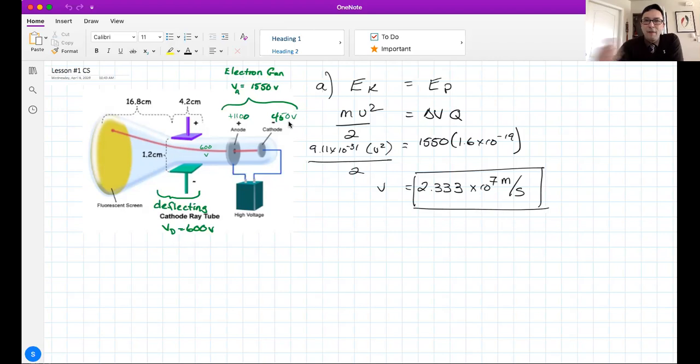That's how fast the electrons are going when they emerge through the little hole in this anode onto this side of the CRT. They have 2.3 × 10⁷ meters per second horizontally. Now the electrons fly into the space between these two electric plates. One's positive, one's negative, and we can change which one is positive depending which way we want to deflect the electrons. That's why they're called deflecting plates.